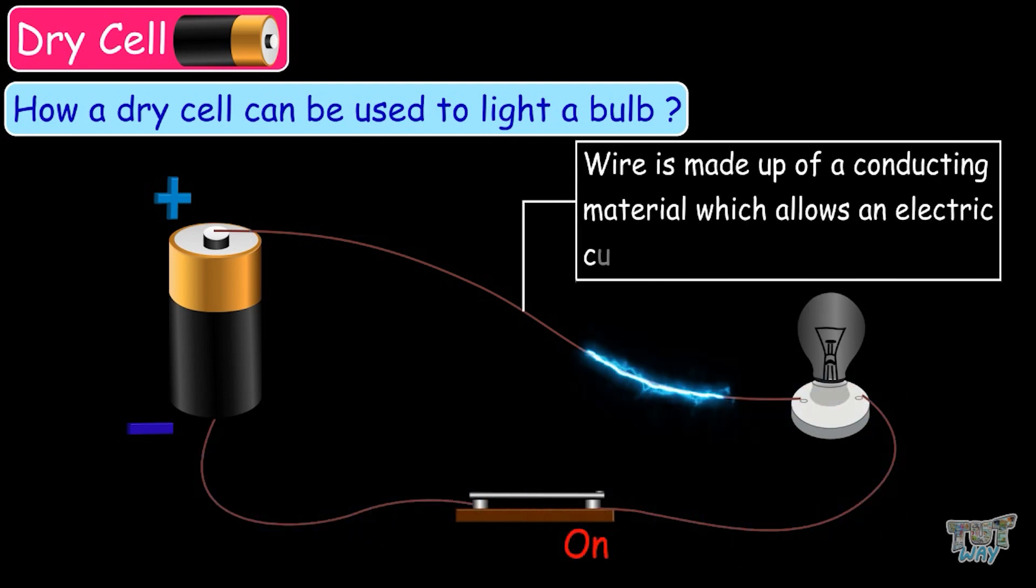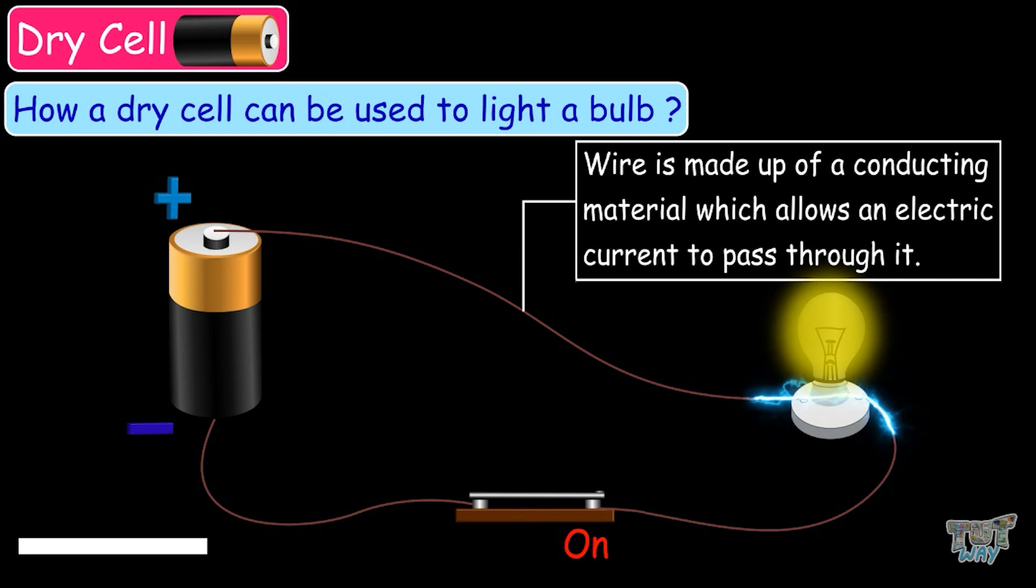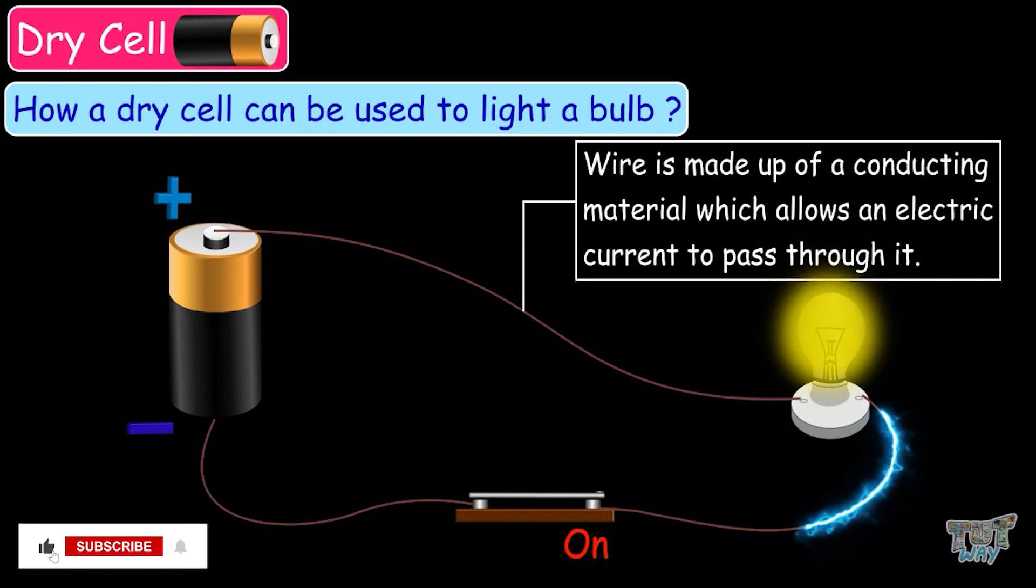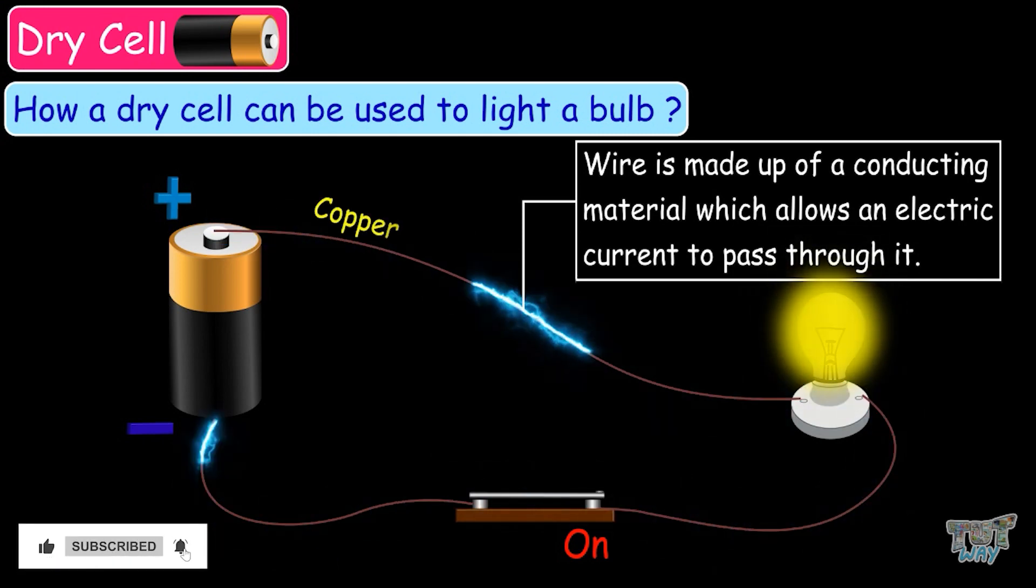And then we have a wire, which is made up of a conducting material, which allows an electric current to pass through it. For example, copper wire.